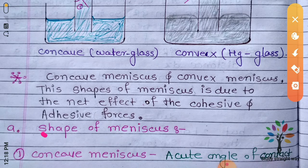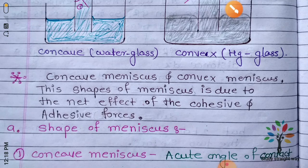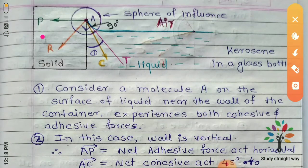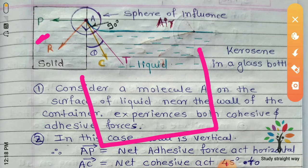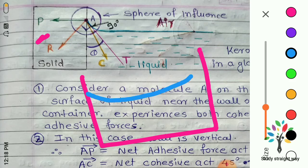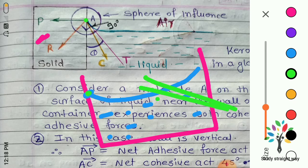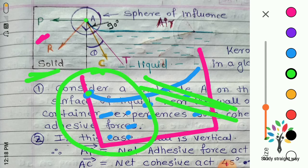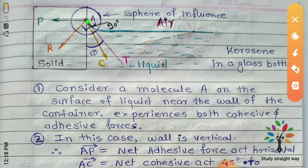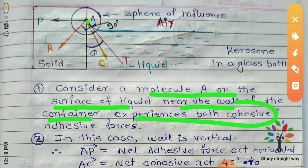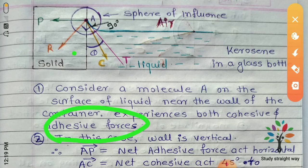The shape of the meniscus will be discussed in detail. If the meniscus is concave, the angle of contact is an acute angle. Consider the diagram of a solid container — one wall is the container. In the container of kerosene, there is a molecule of water near the wall. This molecule is considered at a portion cut near the surface.